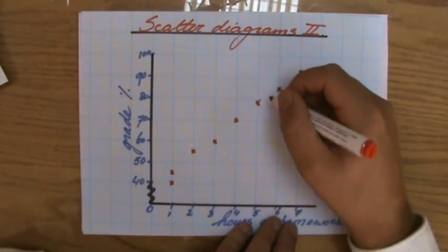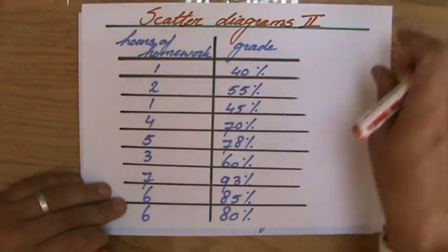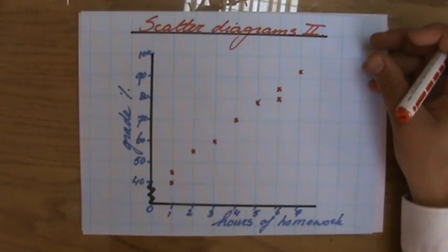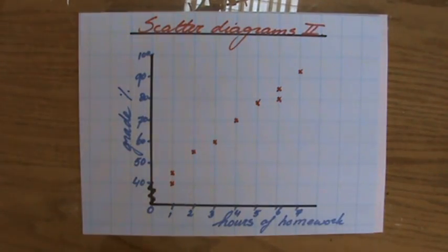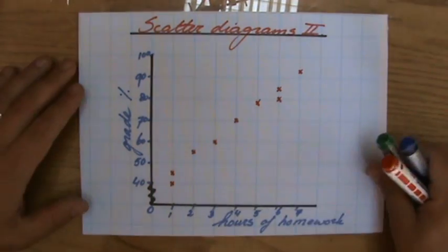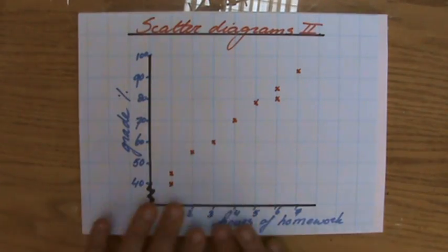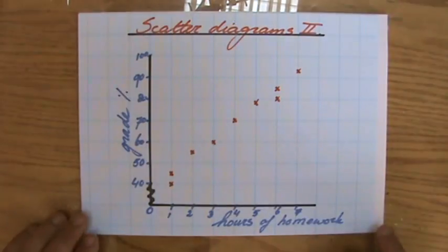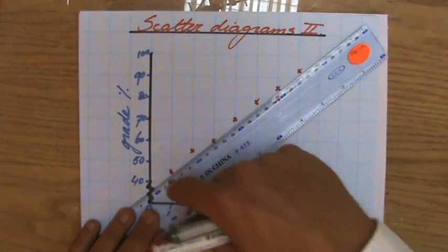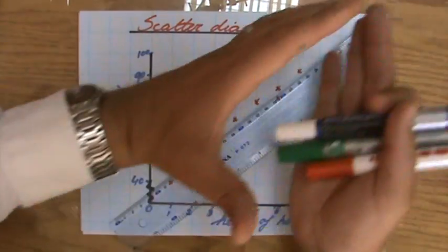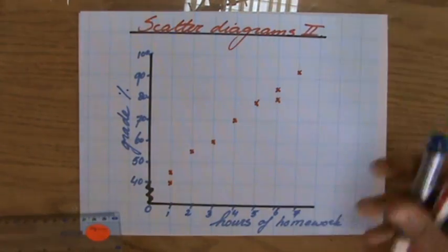And six hours and 80%, also a very good result. So I just plotted these points in my graph. I'm going to put this table away now. And as you can see, what kind of correlation is there? Well, it is a positive correlation because it's going up. So there's definitely a relationship between the amount of hours of homework students do and the grade they receive. And I have to say, it's also quite a strong positive correlation because the points are really near to a line.